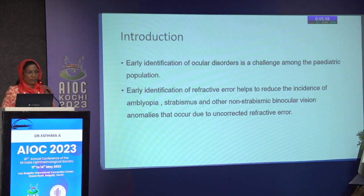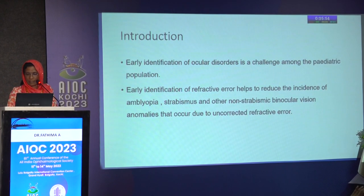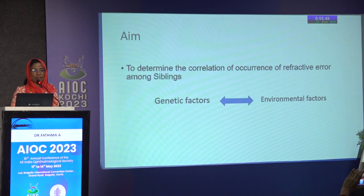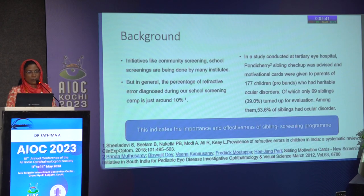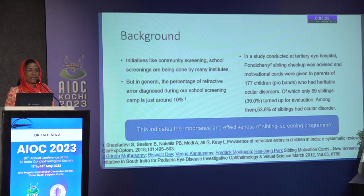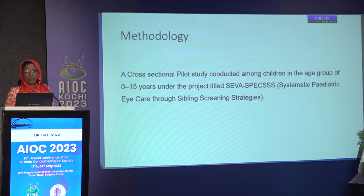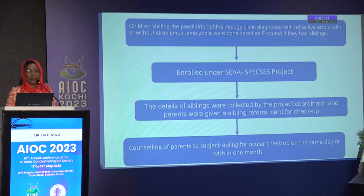Early identification of refractive error among pediatric patients helps reduce the incidence of amblyopia, strabismus, and non-strabismic binocular vision anomaly. The aim of this study is to determine the correlation of refractive error occurrence among siblings, focusing on genetic and environmental factors. In school screening, 10% of children are noted to have refractive error, whereas a study conducted in Pondicherry revealed 58.6% of siblings had an ocular disorder.